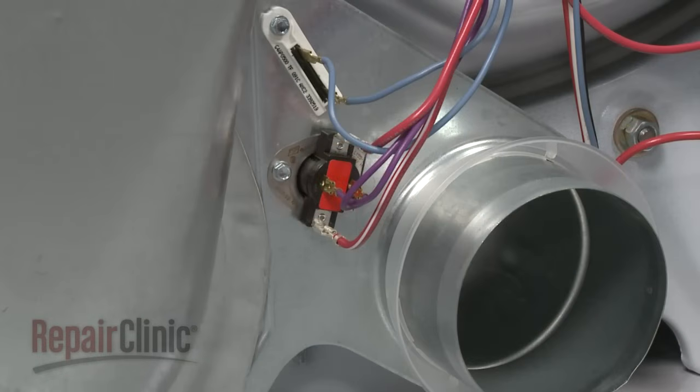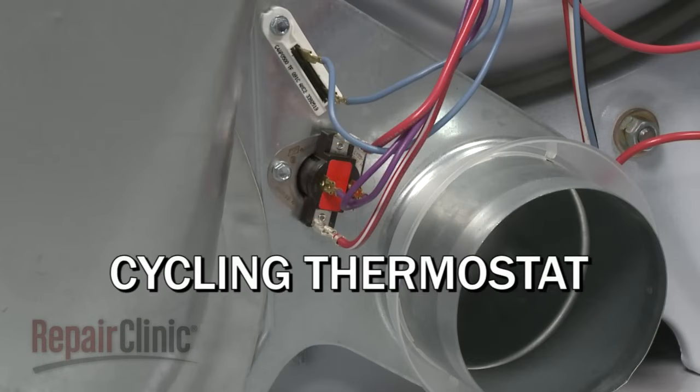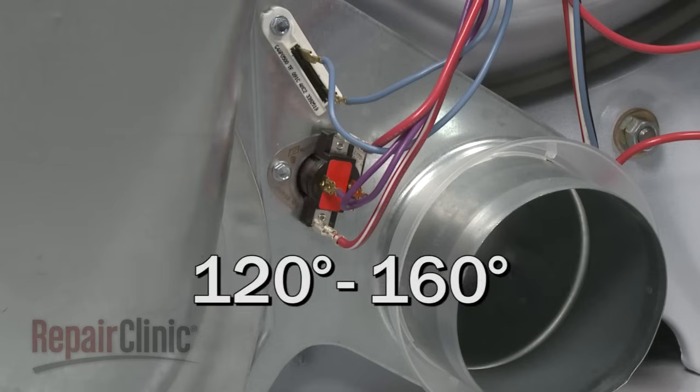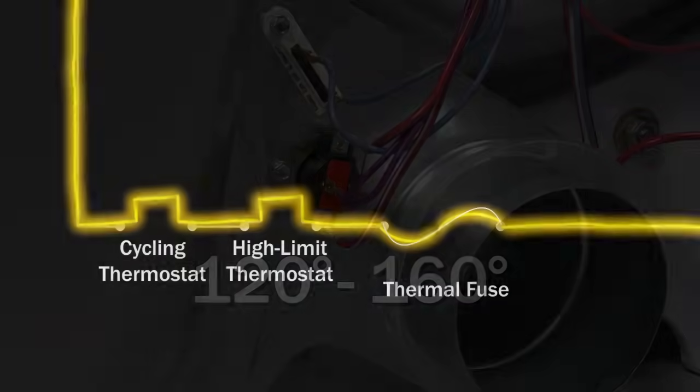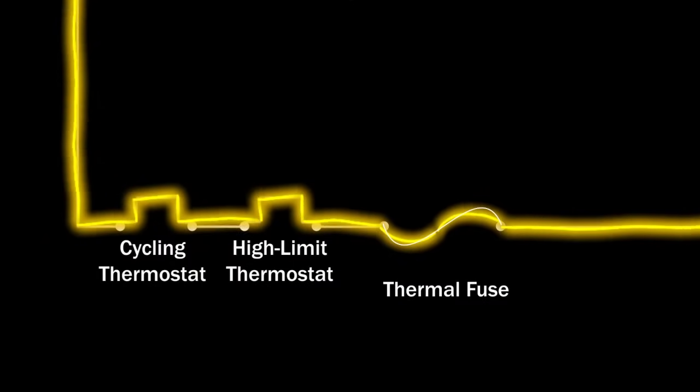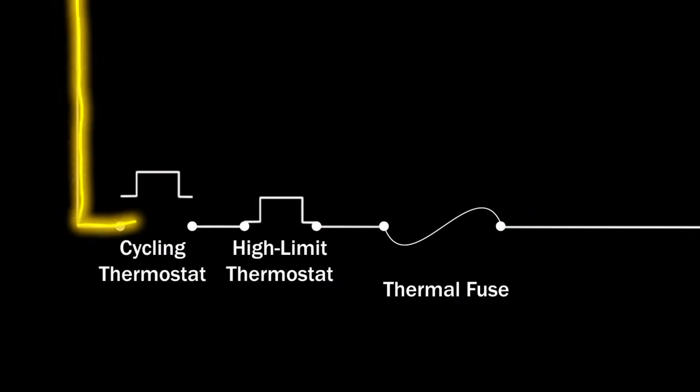To maintain the proper air temperature, the heat in the blower housing is monitored by the cycling thermostat. During normal operation, the air temperature should be between 120 and 160 degrees Fahrenheit. When the air reaches the proper temperature for your dryer, the cycling thermostat will switch off the voltage to the burner assembly.